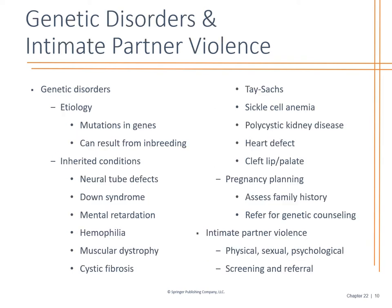Genetic disorders and intimate partner violence — we look at genes, mutations, and family health history. It's important to ask: are there inherited conditions, late-term spontaneous abortions, or stillbirths in the family? That all comes into play with pregnancy planning. We also have to have the hard discussion about partner violence: what is the environment you're in right now? Are you feeling pressured? Is there any issue we need to talk about? We need to screen these patients and refer them if so.